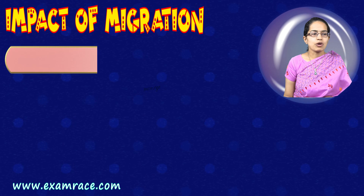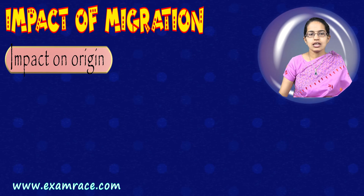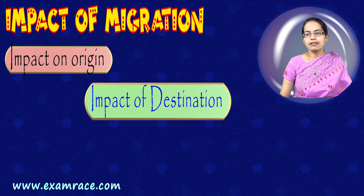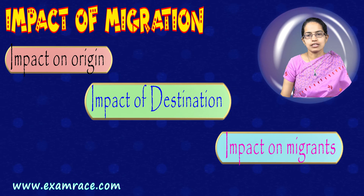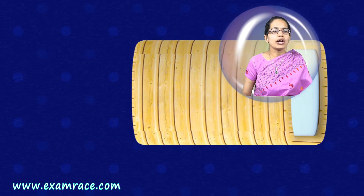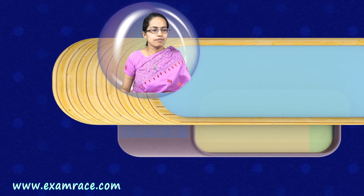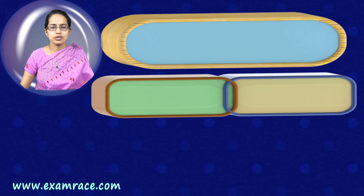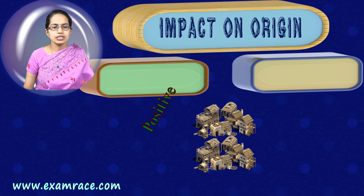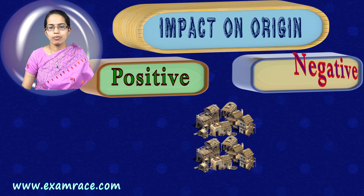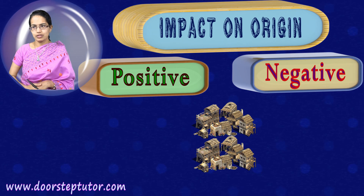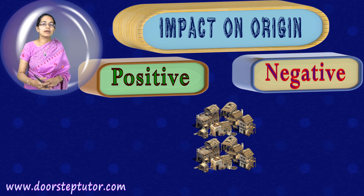When talking about migration, we have three elements: the place from where the migrant originates, the place where he moves which is the destination, and finally the migrant himself. We will look at the pros and cons — positive and negative — for each of those three.